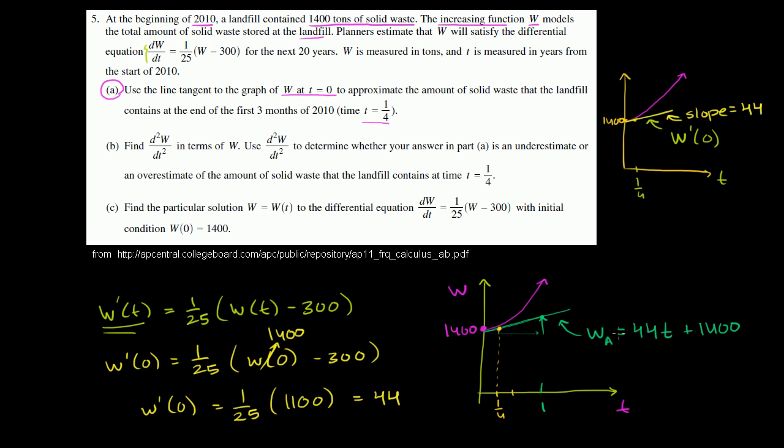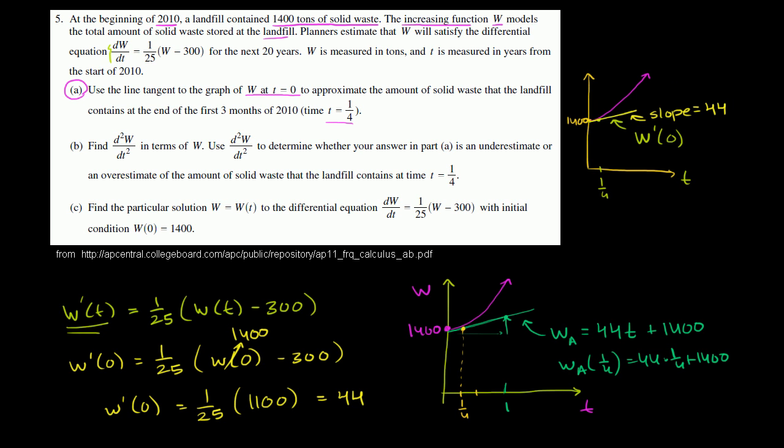So if you put time equals 1 fourth in there, you get it equal to 44. So let me write it this way. So our approximate w at time equals 1 fourth of a year equals 44 times 1 fourth plus 1,400. I'm running out of space, and my salty hands are having trouble writing this properly.